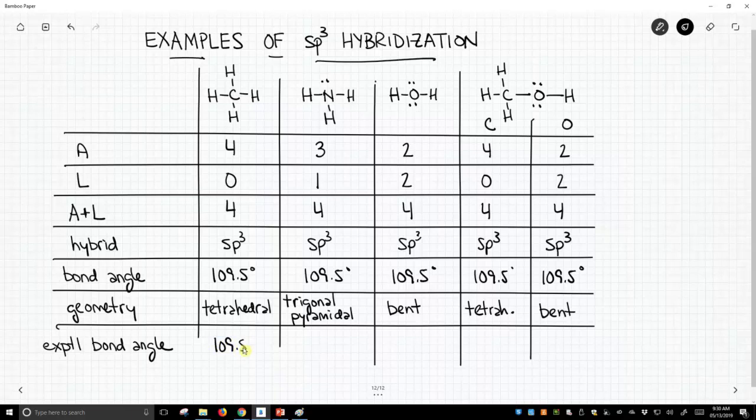The experimental bond angle in methane is 109.5, so that's a perfect match. For ammonia, it's about 107. It's pretty close to 109.5. For water, it deviates a little bit more, but it's still pretty close.